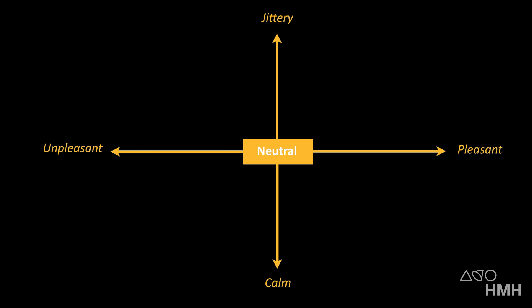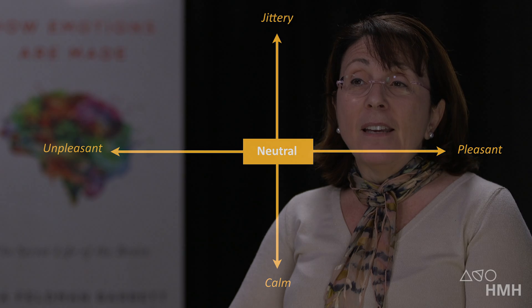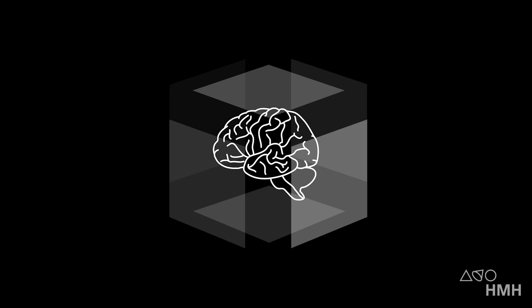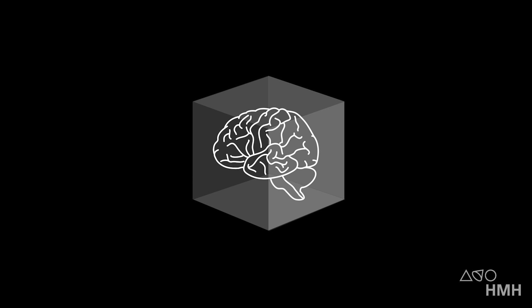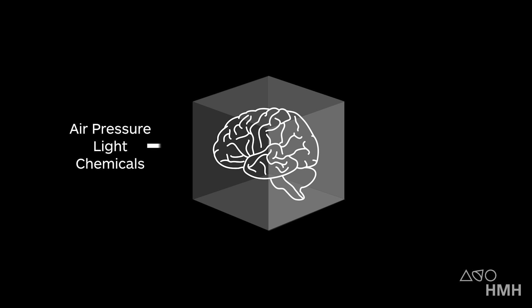Even neutral stems from these physical changes. Second, your brain has to remember your past experiences. Here's a way to think about it: your brain spends all of its time locked in a dark, silent box called your skull. Its only clues about what's going on in the world around you come from scraps of information from your senses.